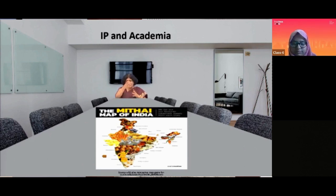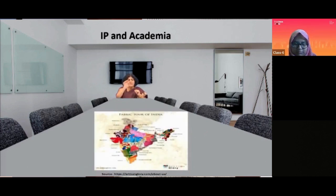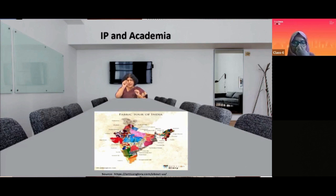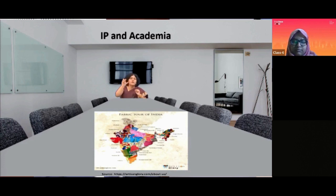We have seen the dances, then we have seen the Mithai, and now we will move further and check the fabrics. For a particular region, for example, Chanderi saree, Kota Doria, Kanjivaram saree, Pashmina shawl, Solapuri chadhar — this is a particular region and you can see that particular fabric. So what types of IPs are related to it?